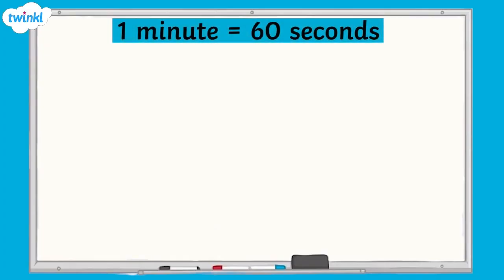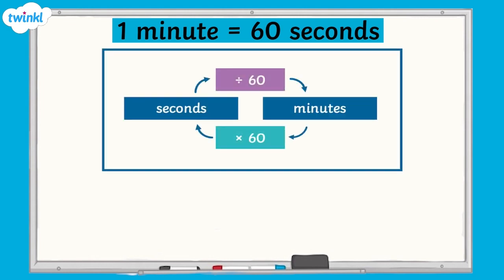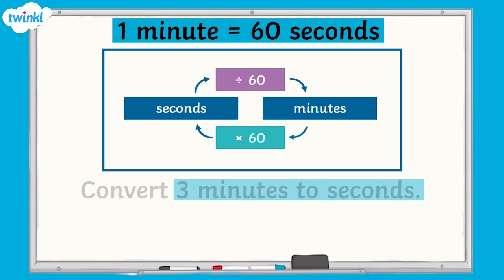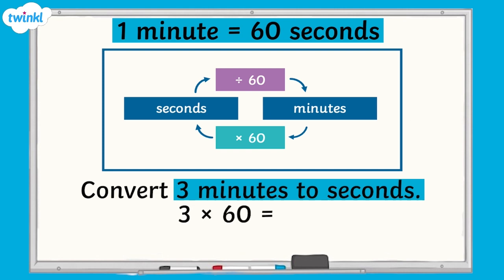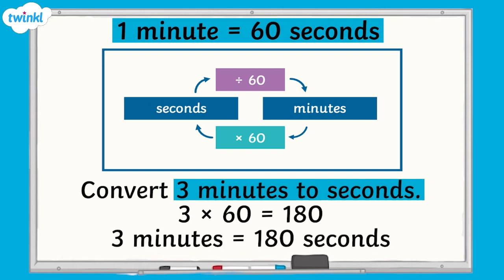Now that we've recalled some of the key units of time, let's take a look at how to convert between seconds and minutes. There are 60 seconds in one minute. To convert minutes to seconds, we multiply the number of minutes by 60. For example, to convert 3 minutes to seconds, we would multiply 3 by 60. 3 multiplied by 60 equals 180, so 3 minutes equals 180 seconds.